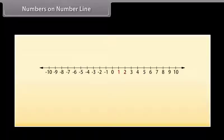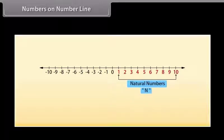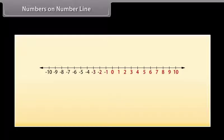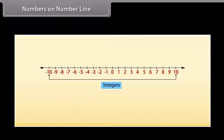Numbers on number line. On a number line, numbers 1, 2, 3, 4 and so on are called natural numbers, denoted by the symbol N. If we include the number 0 with the natural numbers, then the numbers are called whole numbers, denoted by the symbol W. All these numbers together with negative numbers are called integers, denoted by symbol Z.